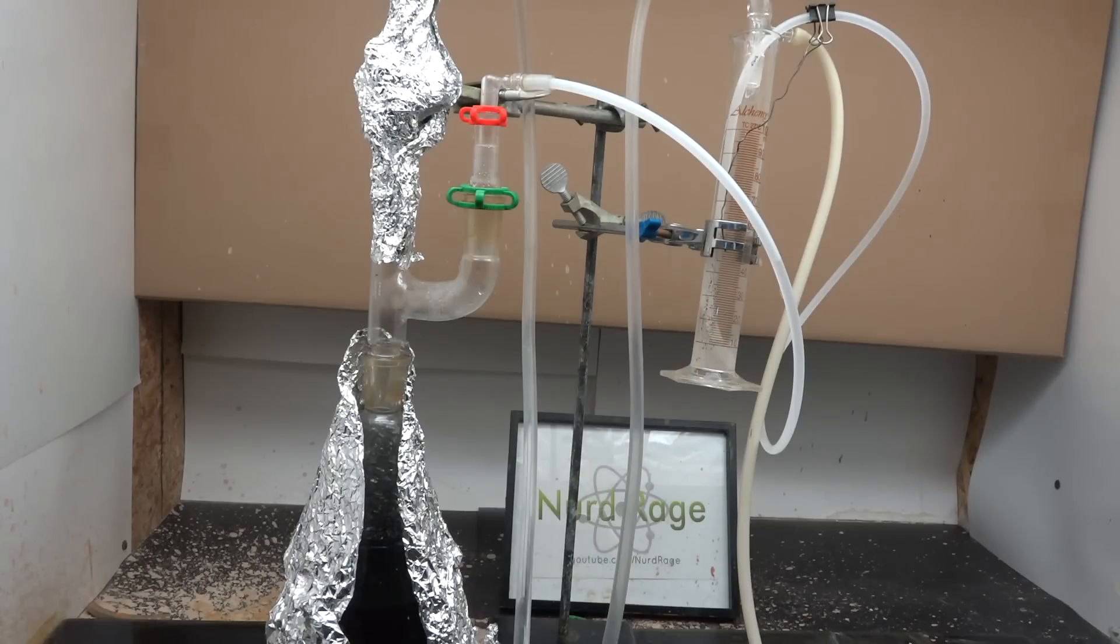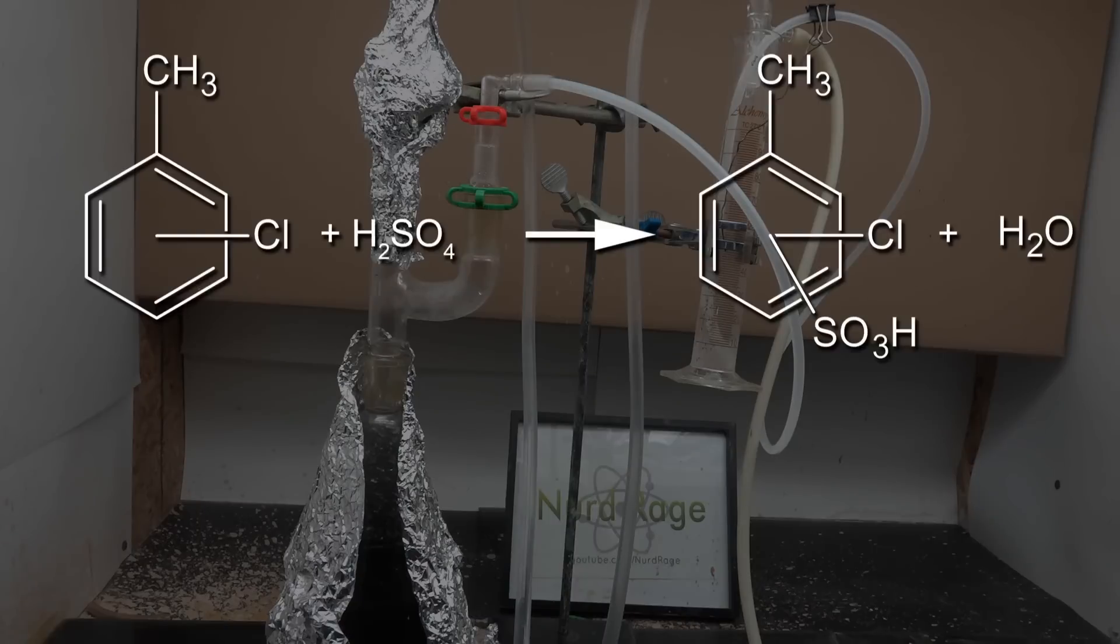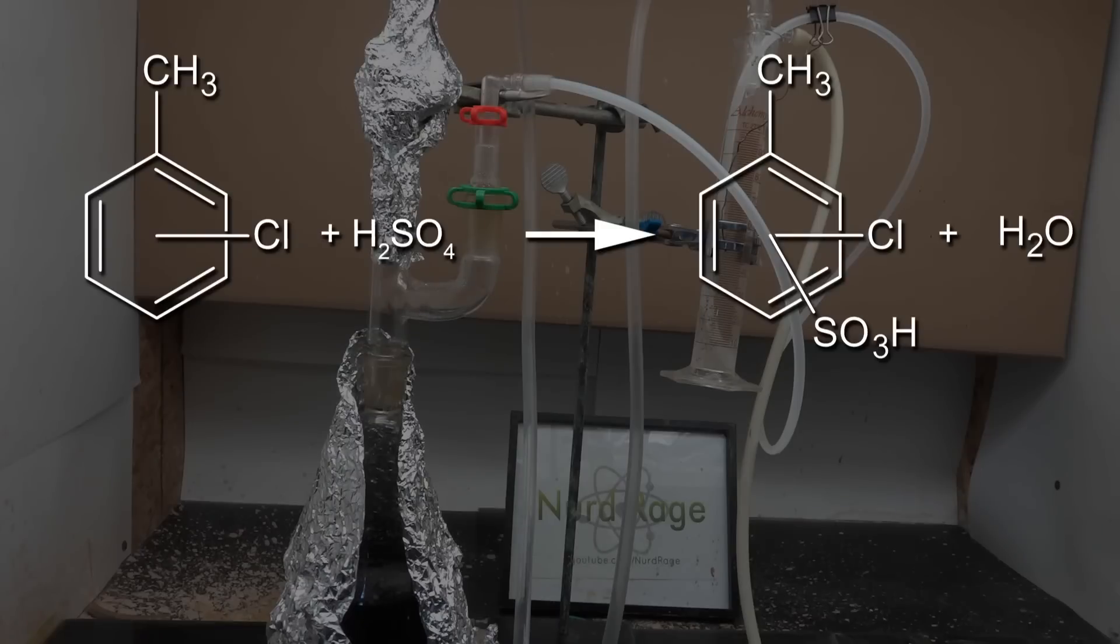Now turn on the heating to 300 degrees celsius and let it boil. What we're doing is sulfonating the chlorotoluene and releasing water. By turning up the heat high enough to boil the mixture the water boils out along with chlorotoluene. The Dean-Stark trap allows us to conveniently separate and return the chlorotoluene and just keep the water. By removing the water from the reaction we drive it forward.